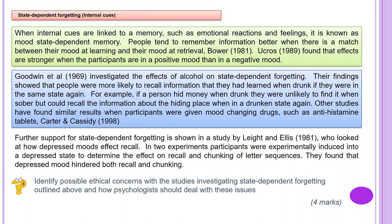Further support for state dependent forgetting comes from Leight and Ellis in 1981, who looked at how depressed moods affect recall. In two experiments, participants were experimentally induced into a depressed state to determine the effects on recall and chunking of letter sequences. They found that depressed mood hindered both recall and chunking.